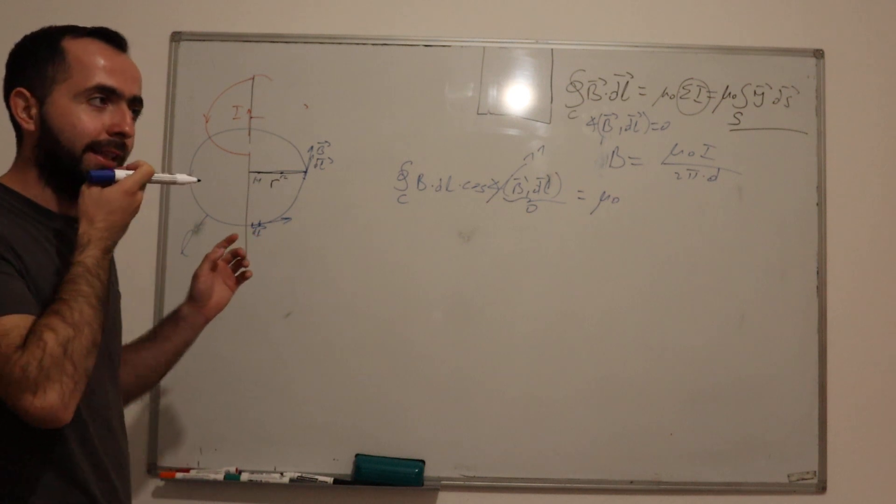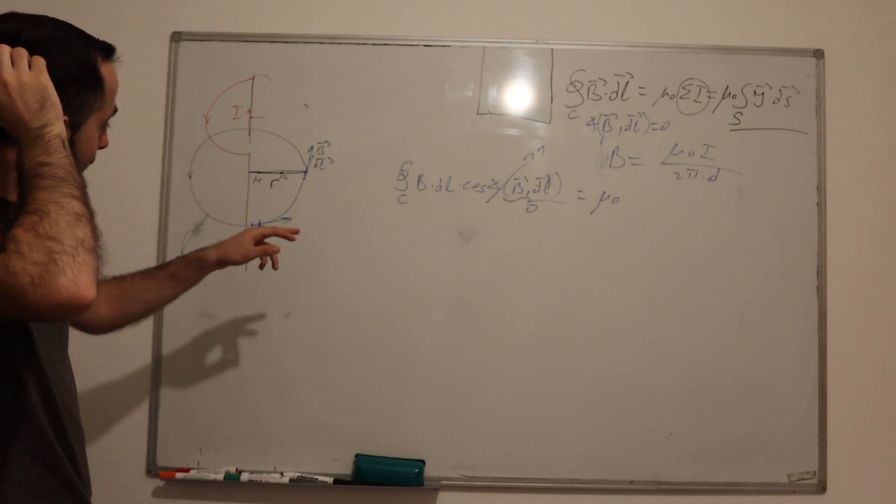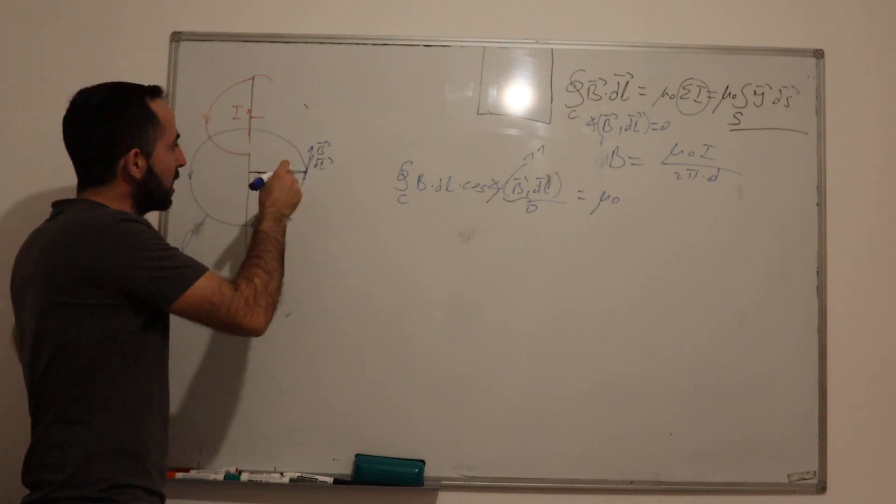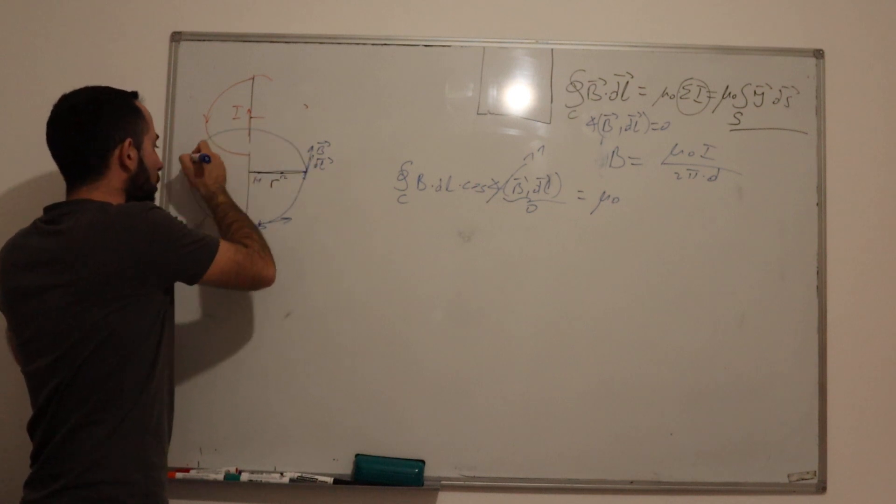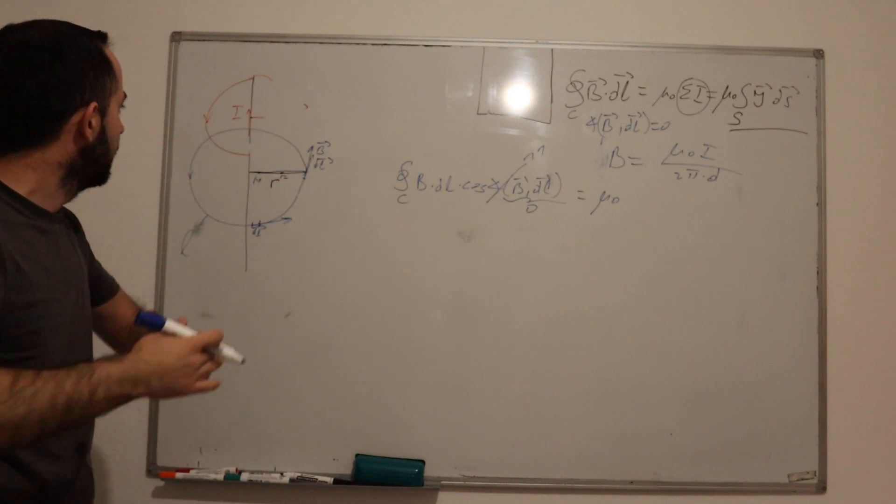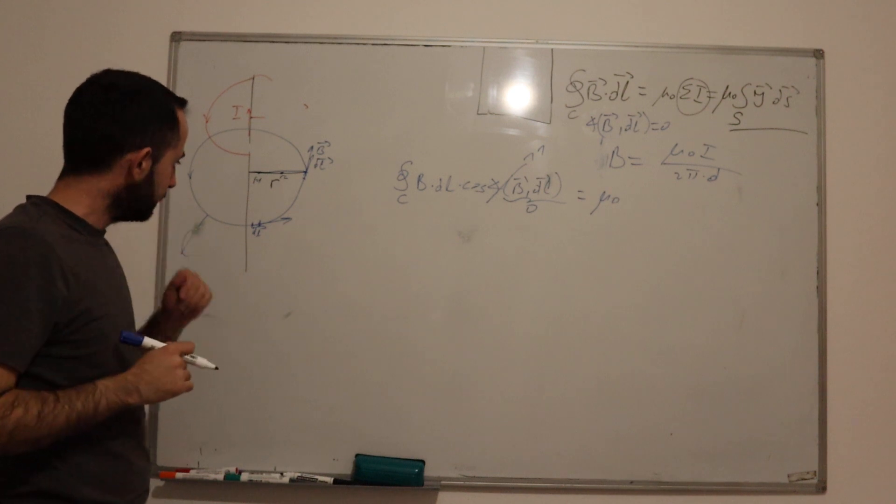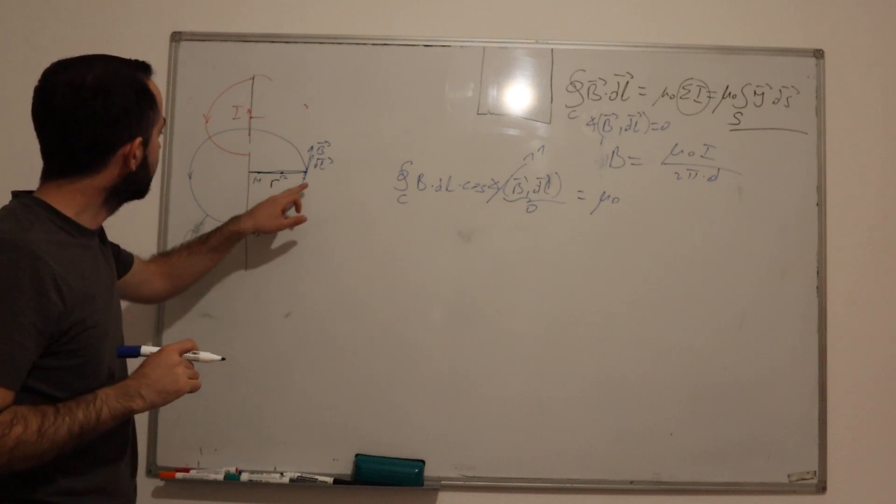Which currents are included? They are included those currents which this closed contour is around.